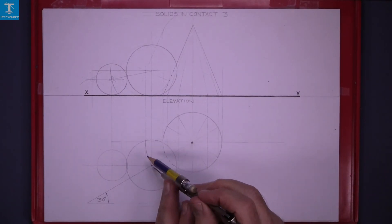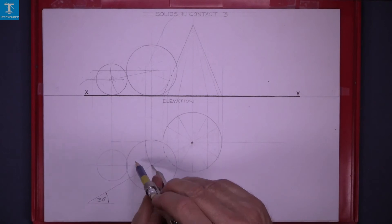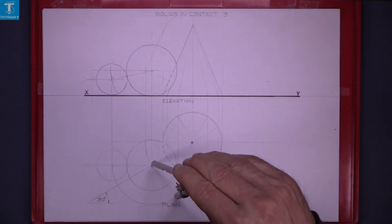Using the centre of the large sphere as centre, rotate the small sphere around the large sphere.